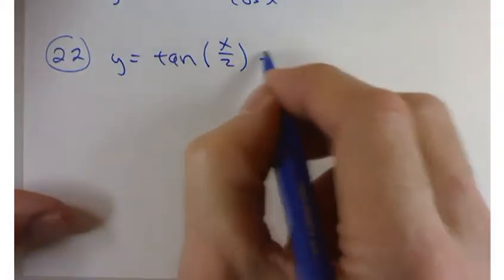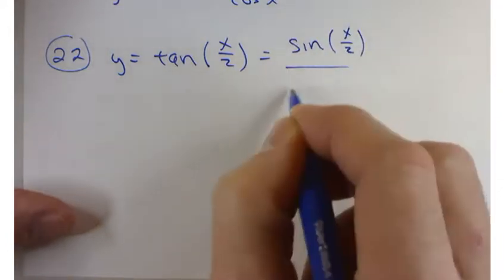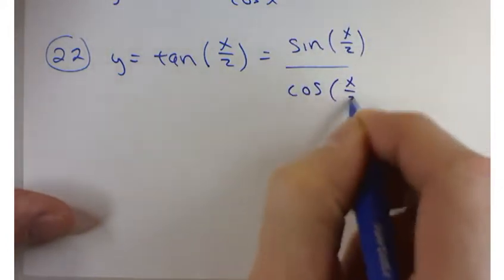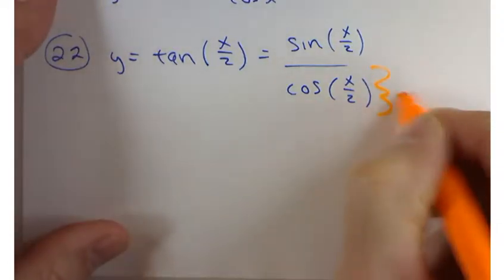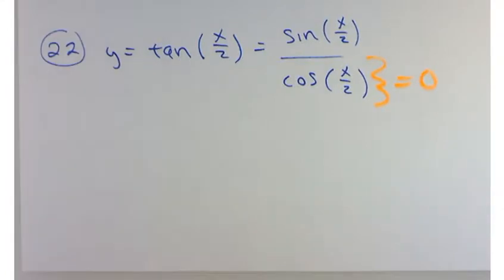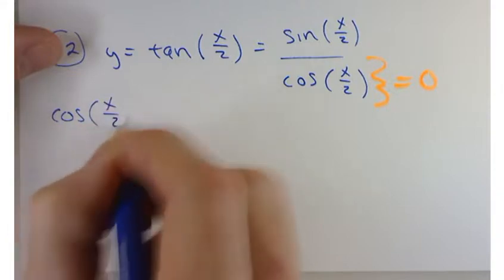To best understand this, let's write this as sine of x over 2 divided by cosine of x over 2. Where am I going to have problems with this graph? What could create a problem here? Yeah, the denominator being 0. So I want to know, where does that equal 0? So cosine of x over 2 equals 0.